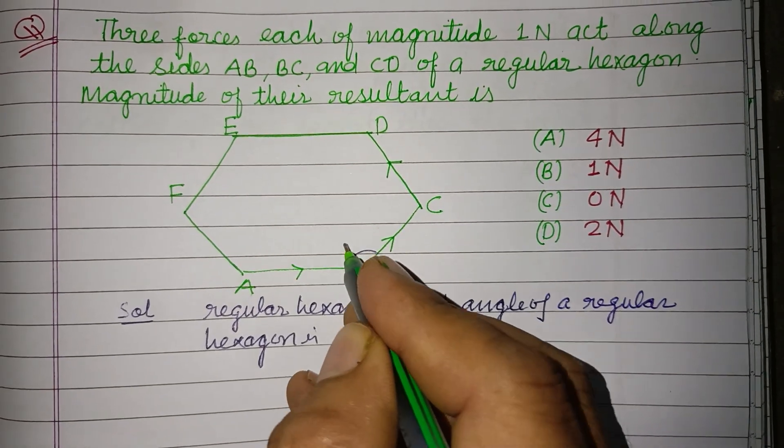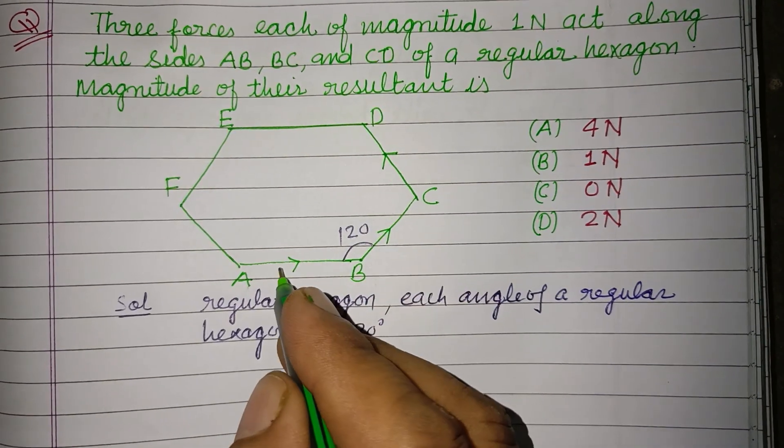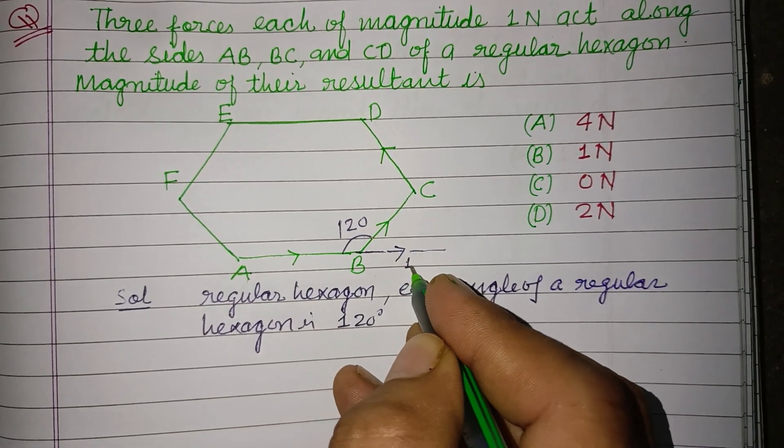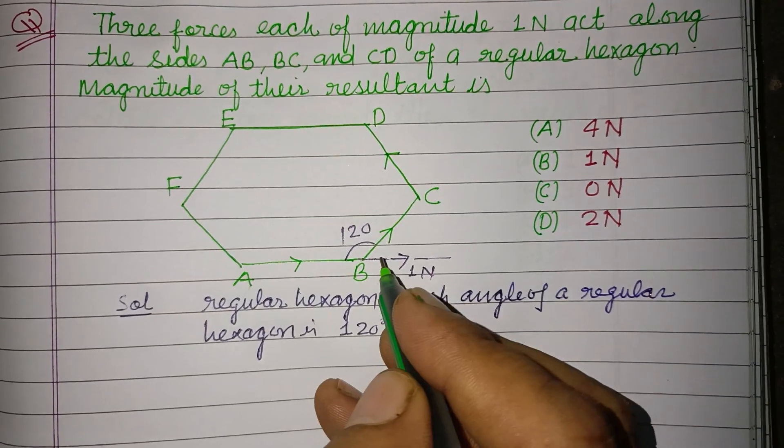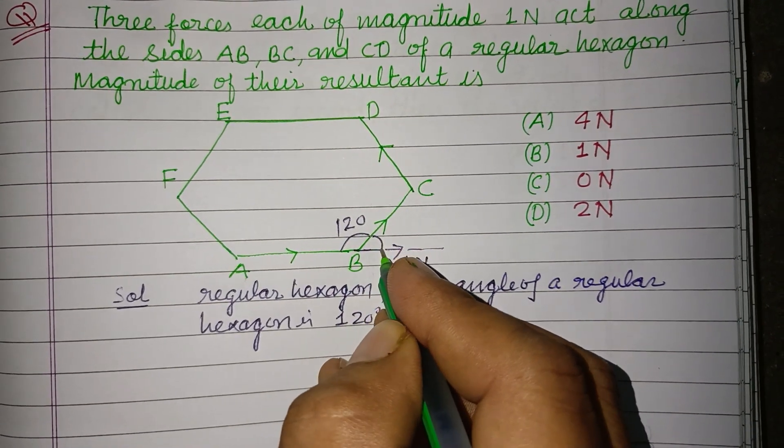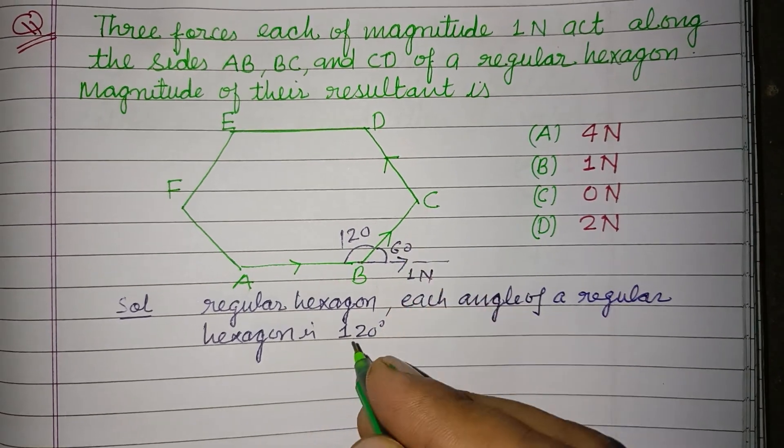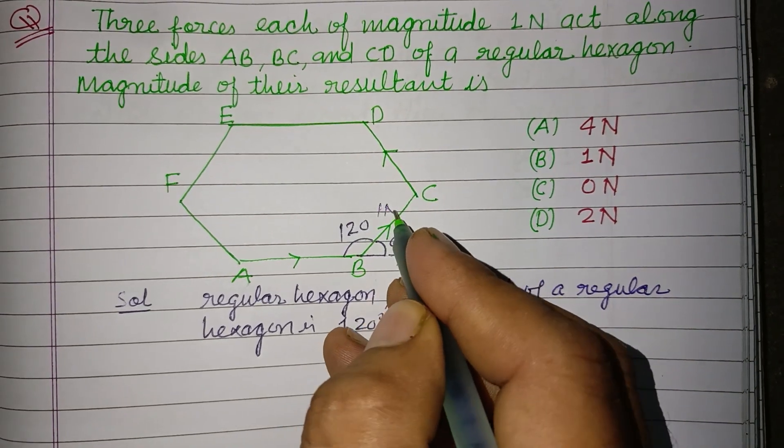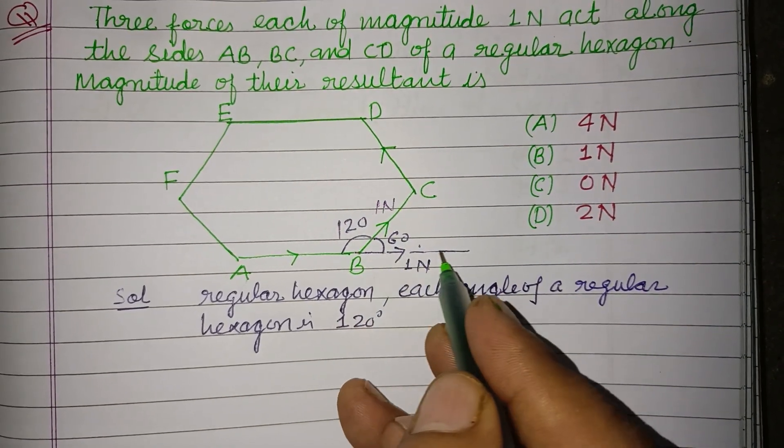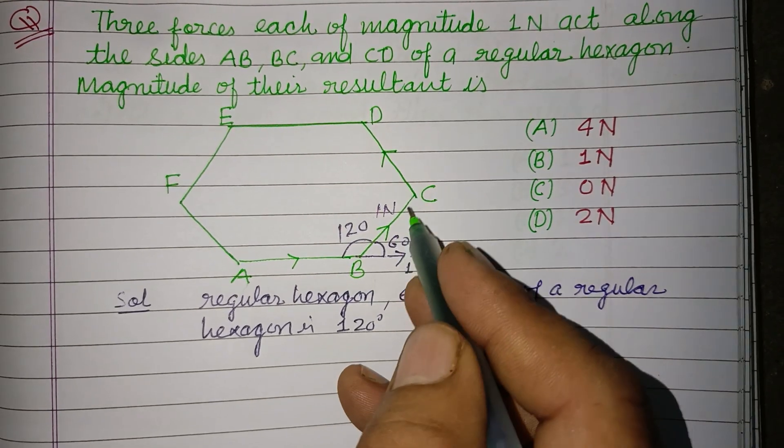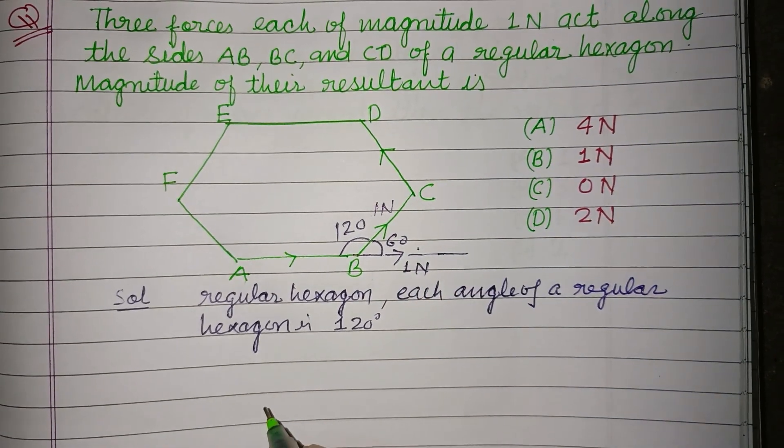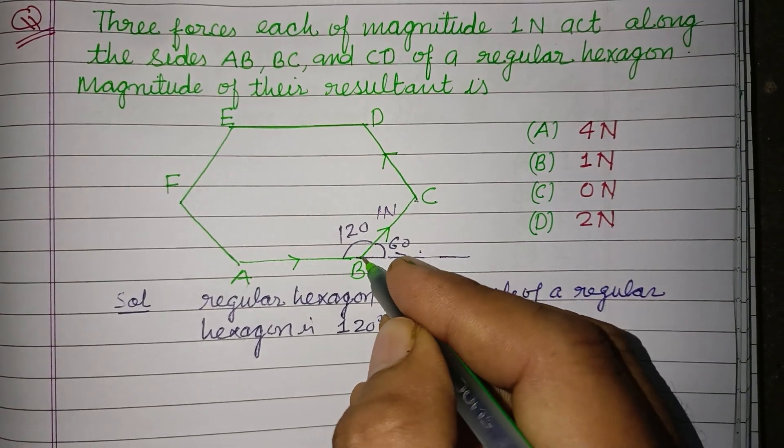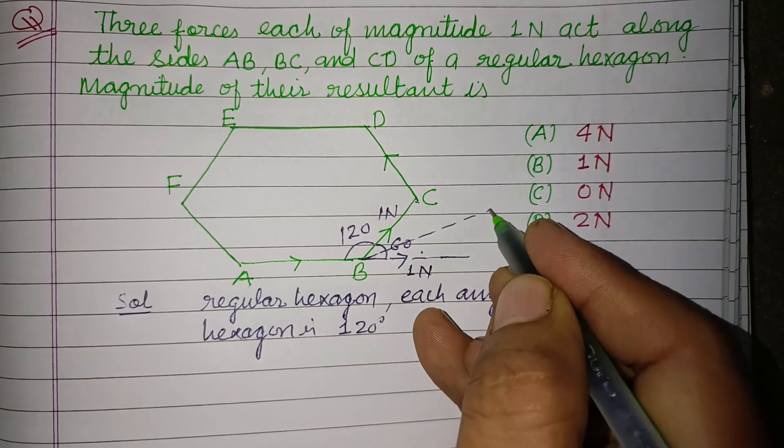So this angle is 120. We take this 1 N force. Here if this is 120 then 180 minus 120 this is 60. So angle between these two forces which are 1 N and acting as two sides of a parallelogram, so their resultant will be this.